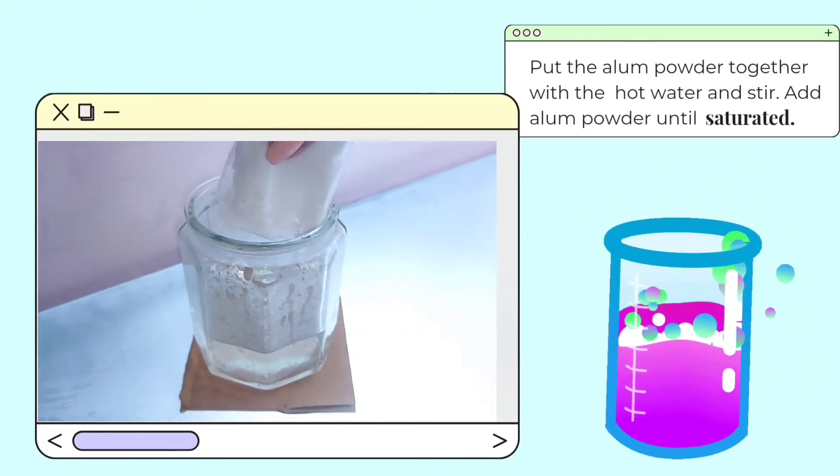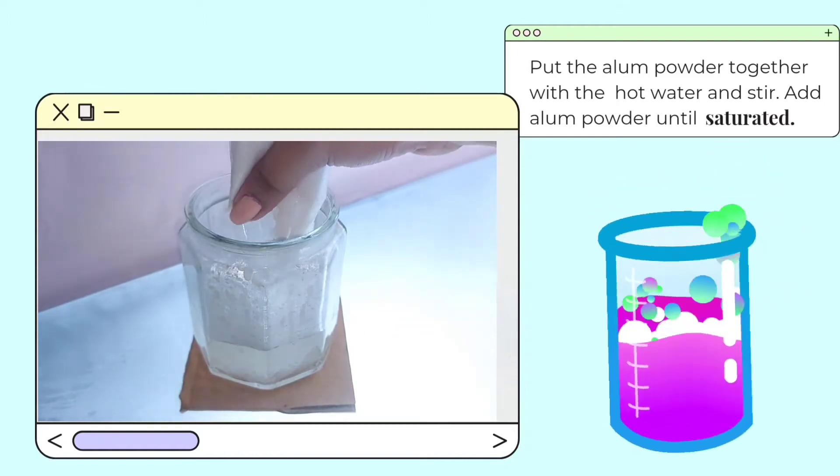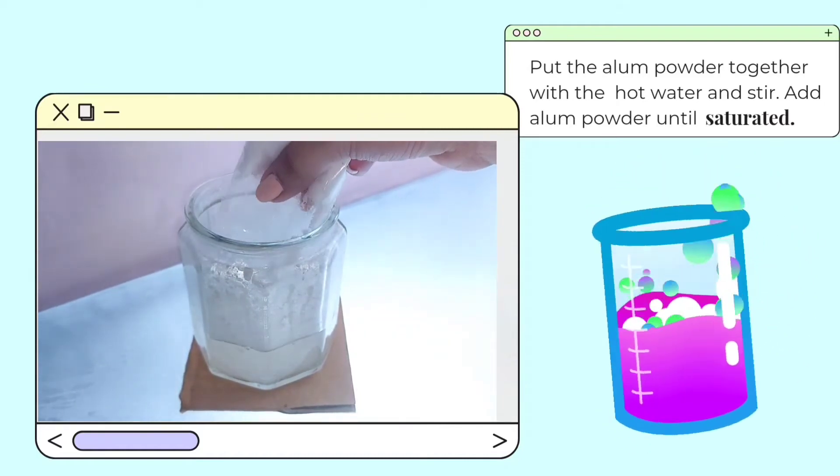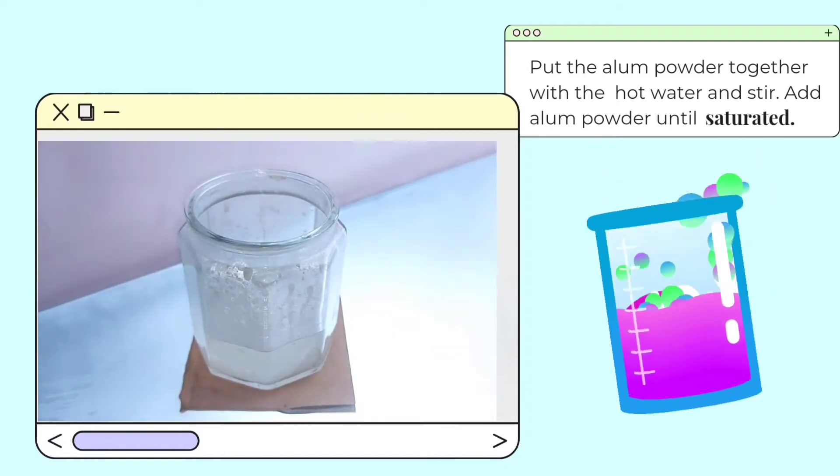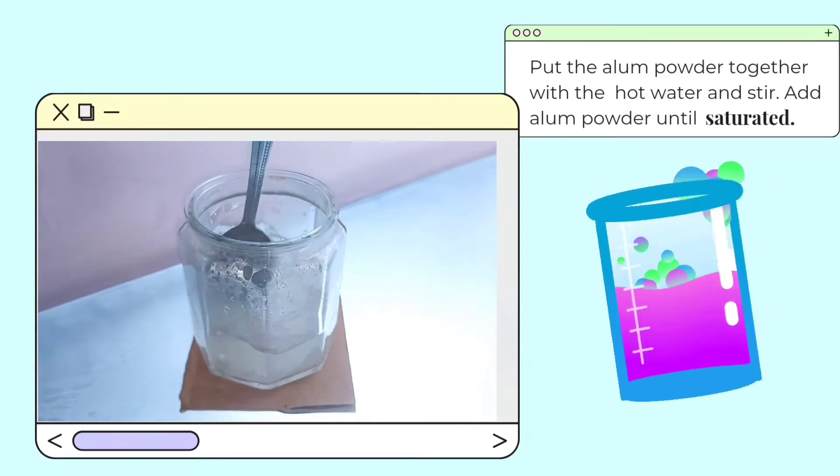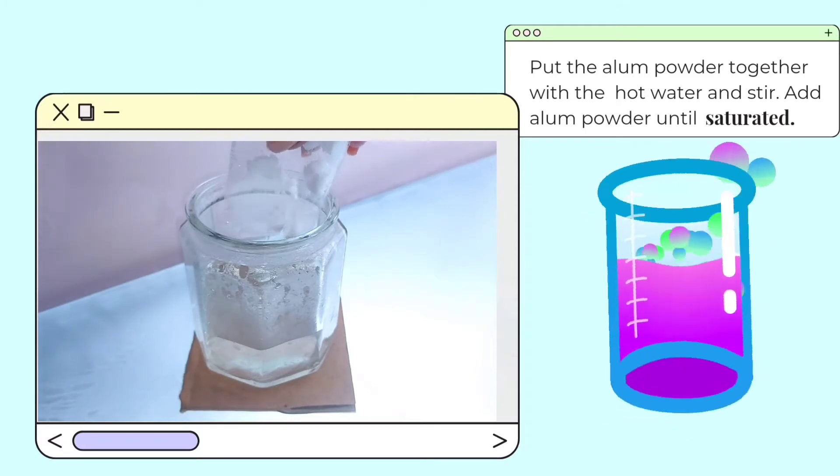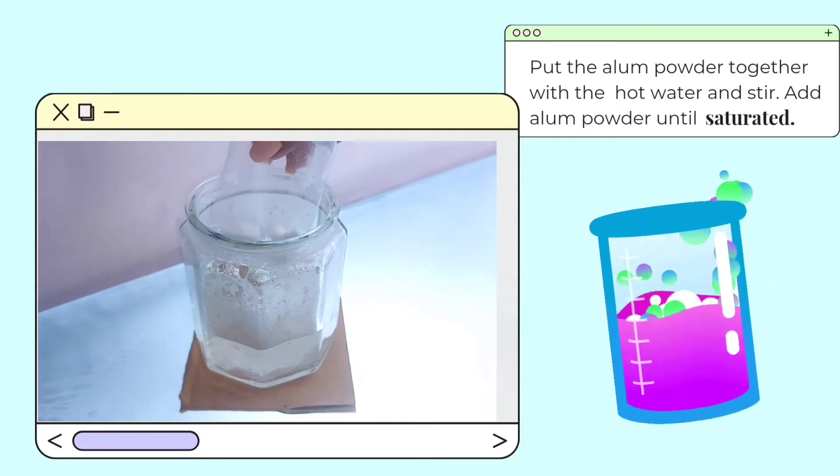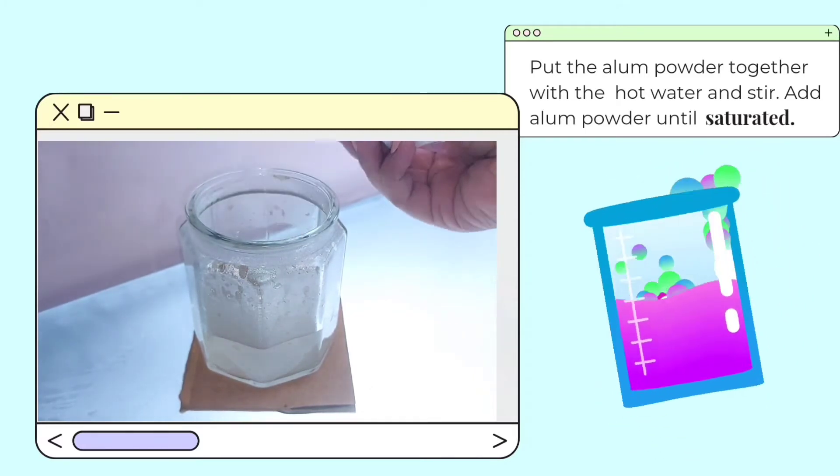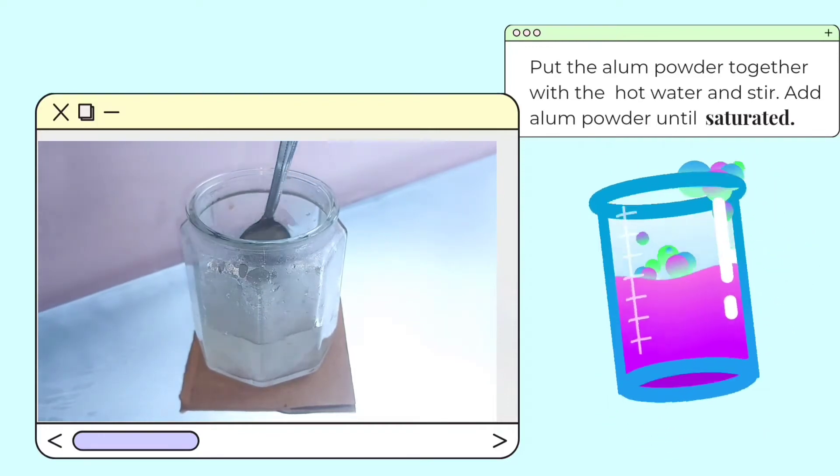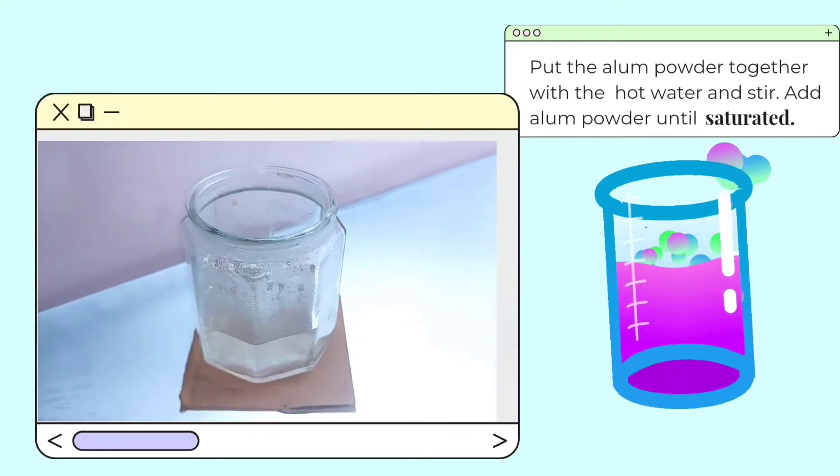Then add your alum powder. Keep adding alum and stirring until the alum no longer dissolves. You may see a small amount of alum powder at the bottom of the jar. The purpose of this process is to make a saturated solution where undissolved substances settle to the bottom.